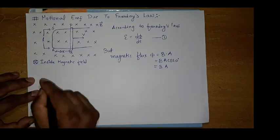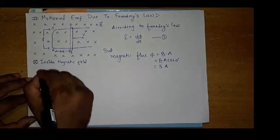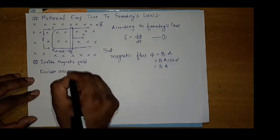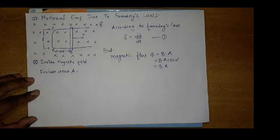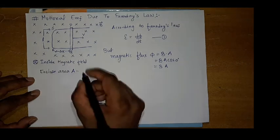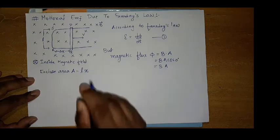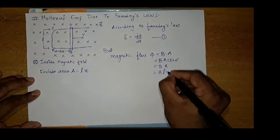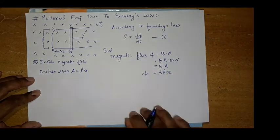Question is what is A? A is the enclosed area. A is equal to length into width, which is L into x. So this flux becomes B into L into x.